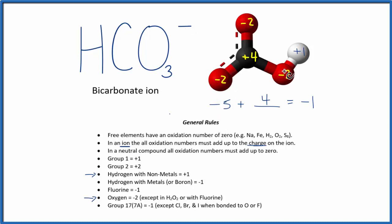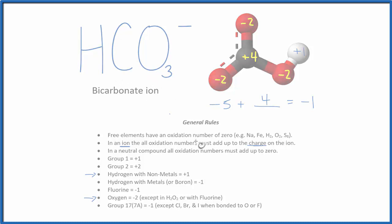To recap, we figured out the oxidation number for the atoms that we knew from these general rules, and we used that information, and the charge on the entire ion here, to figure out the oxidation number on the carbon. This is Dr. B with the oxidation numbers for the bicarbonate ion, HCO3 minus. Thanks for watching.